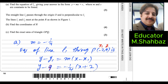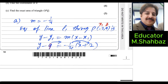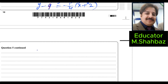Now simplify to write the equation in standard form where y is alone. Move the 9 to the other side — since it is negative 9, it becomes positive. Expand the bracket: -1/4 multiplied inside gives -1/4·x and -1/4 multiplied by 2 gives -1/2, and negative 9 becomes plus 9.